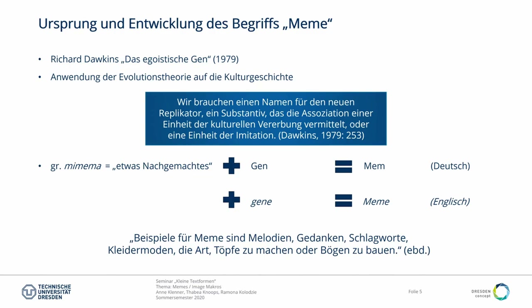Memes können nach Dawkins fast alles sein: Melodien, Gedanken, Schlagworte, Kleidermoden, die Art Töpfe zu machen oder Bögen zu bauen – also alles, was irgendwie von Mensch zu Mensch weitergegeben wird. Gerade dieses zentrale Element des Weitergebens und Teilens ist der Grund, wieso Internet-User angefangen haben, diesen Begriff auch für Internetphänomene zu nutzen, für Dinge, die sehr präsent sind und weit verbreitet werden.